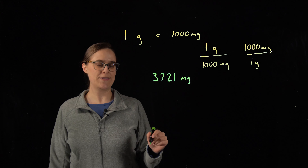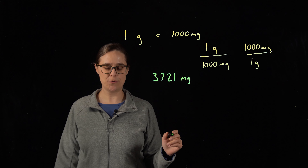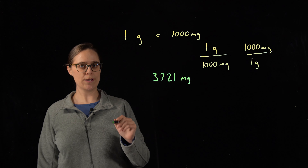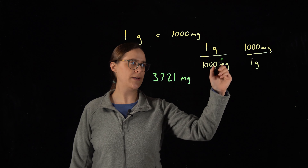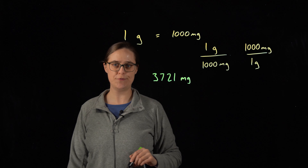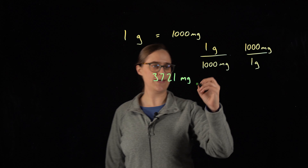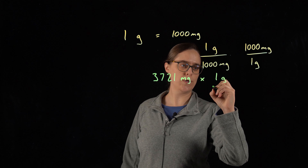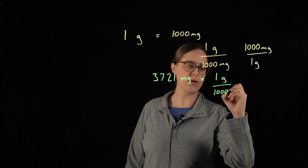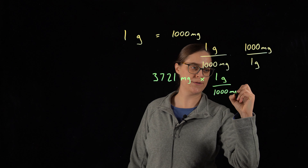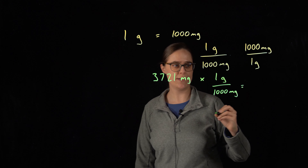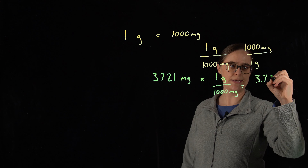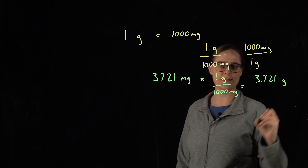So let's convert 3,721 milligrams into units of grams. I need to multiply by one of these two fractions. In this case, I'm going to multiply by 1 gram divided by 1,000 milligrams. The answer I end up getting is 3.721 grams.